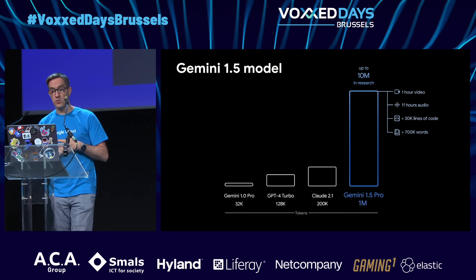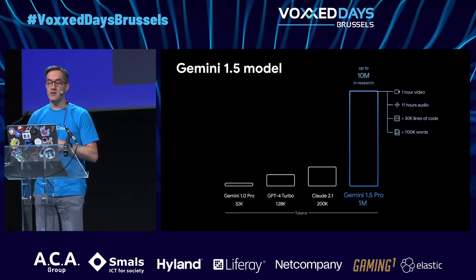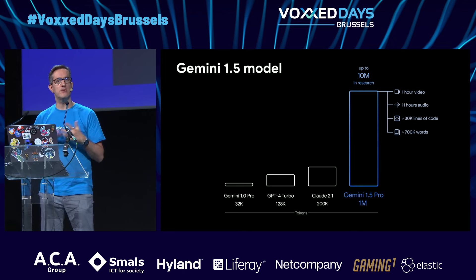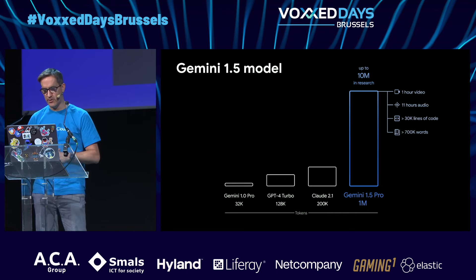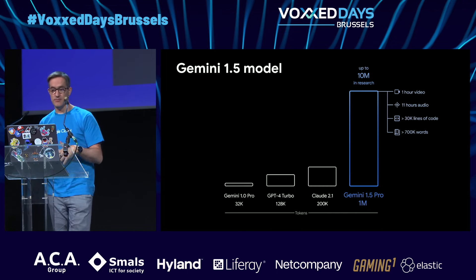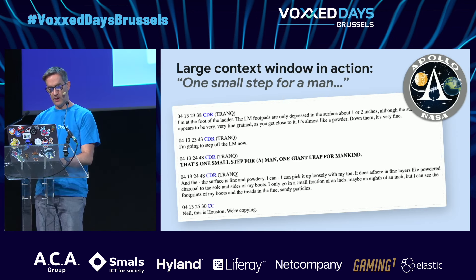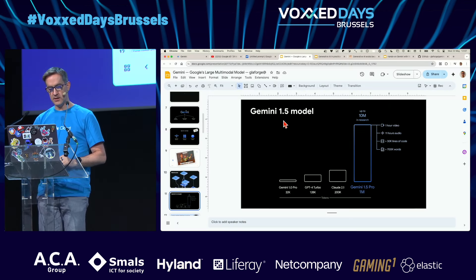Seven thousand pages — so you can feed pretty much all of Harry Potter in the context window, and the model will be able to answer questions about it. Two million tokens will be twice as big. Maybe we can have a quick look at Gemini.